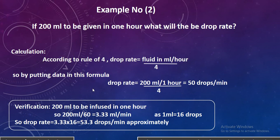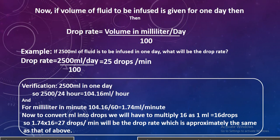Let's verify it. 200 mL to be infused in one hour: 200 mL divided by 60 gives 3.33 mL per minute. Since 1 mL equals 16 drops, the drop rate will be 3.33 multiplied by 16, which comes out to be 53.3 drops per minute — approximately the same as 50. Not that much difference.